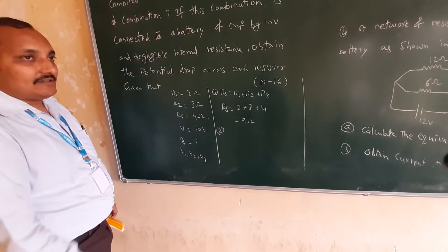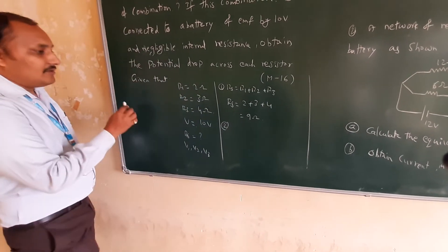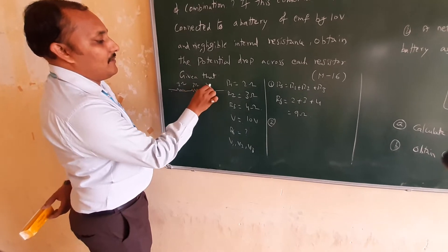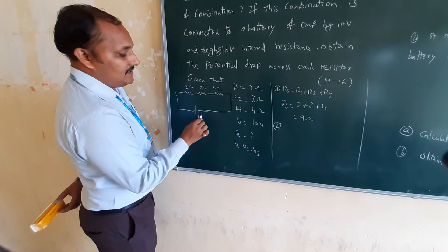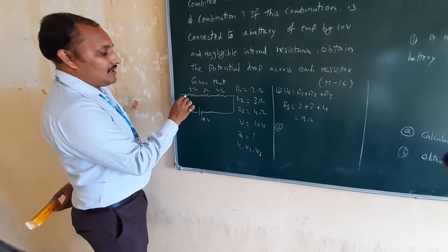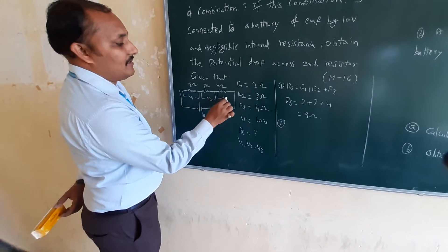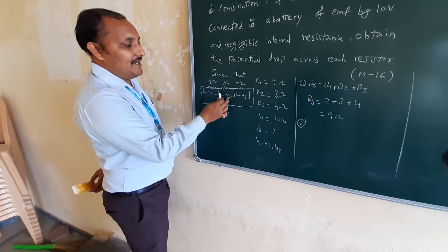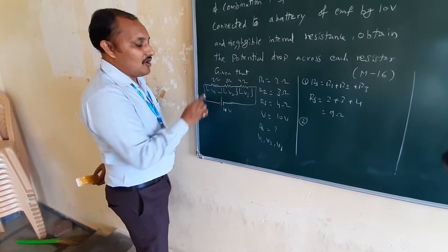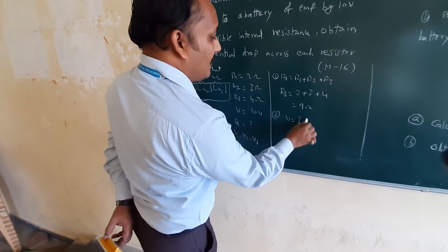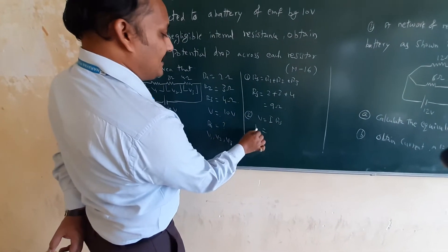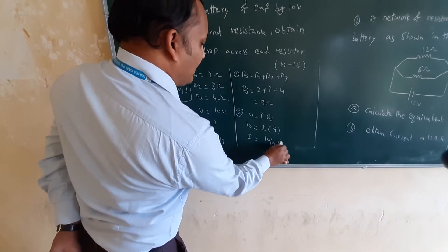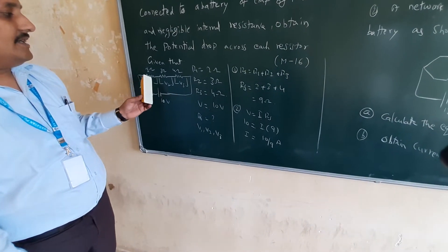Now for V1, V2, V3 — we can draw the diagram: 2 ohm, 3 ohm, 4 ohm connected to 10 volts. In series, current is the same throughout. First we calculate the current. V = I × Rs, so I = V/Rs = 10/9 amperes. This is the current flowing through each resistance.